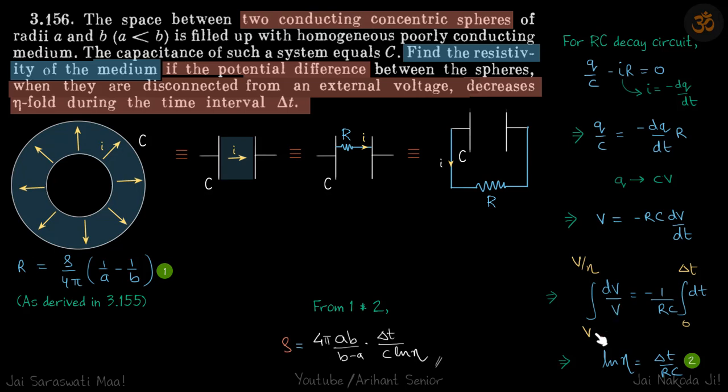And it's given that potential goes from V to V by eta. So it drops by eta amount. It drops eta times. So it becomes V to V by eta in time 0 to delta t. So this gives ln eta is equal to delta t by RC.